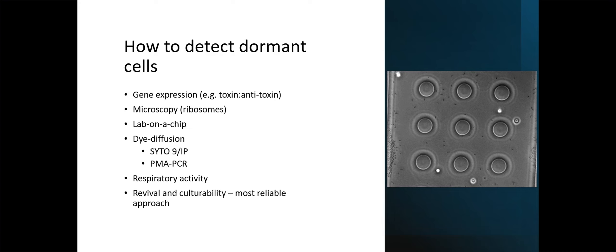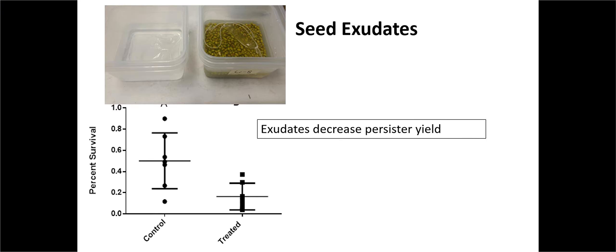You can't tell if a persister is a dead or live cell or a persister by using these dyes. Other people say, what about respiratory activity, oxygen consumption? Again, it doesn't work. They're low metabolism. A bit like Robert Koch said, the only way you can tell a persister is if you revive it, if it can grow.